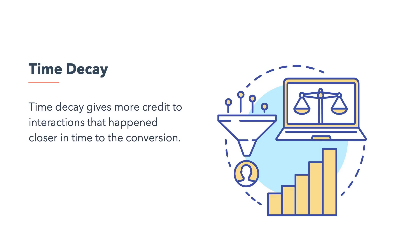Time decay gives more credit to interactions that happen closer in time to the conversion. Time decay attribution is ideal if you're measuring the success of time-bound efforts like campaigns.